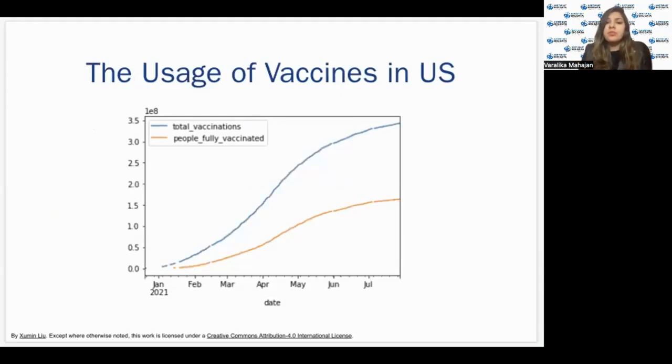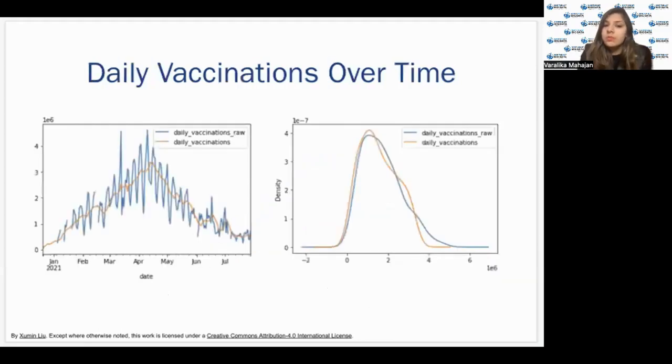For example, we just plot the uses of vaccines in US. The blue line represents the total vaccinations and the orange line represents the people fully vaccinated from January to July. This gap represents how many vaccinations are going wasted and are not being utilized by the people. Another graph which we can plot on a time series basis from January to July again is the daily vaccination data, raw data upon daily vaccinations.